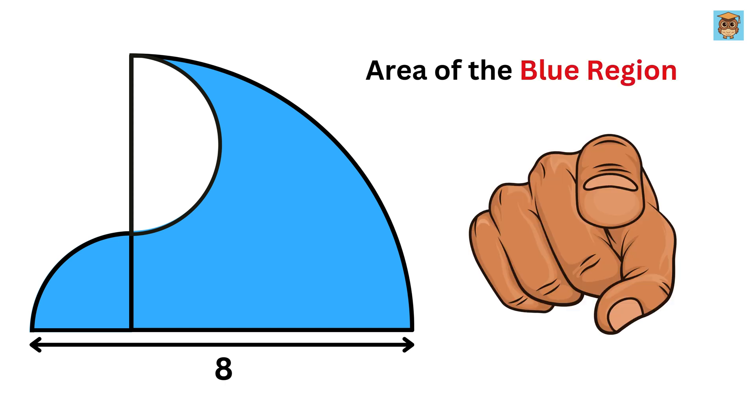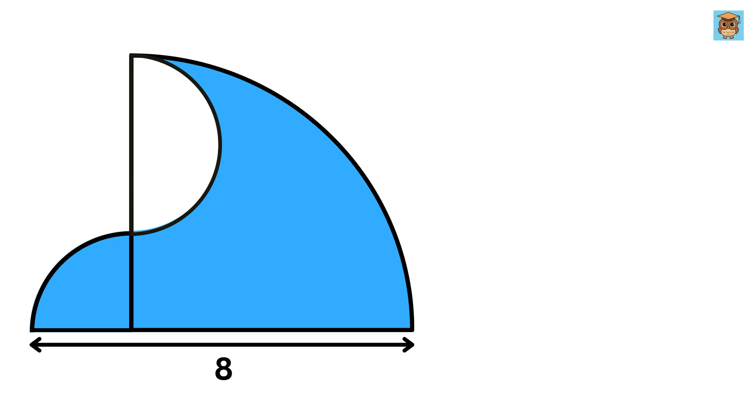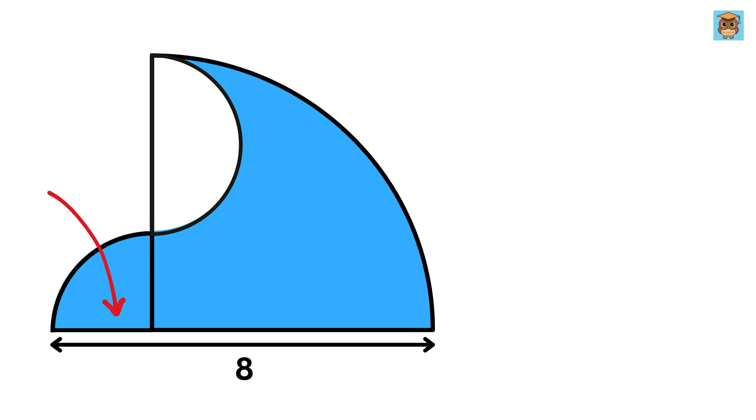So, can you solve it? Okay, as a first step, let us label the radius of this small quarter circle as r. So this will also be r.